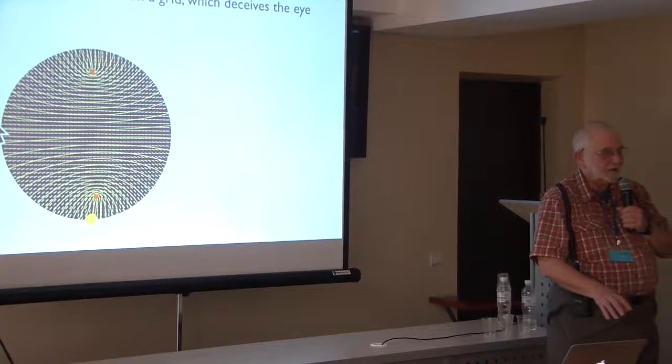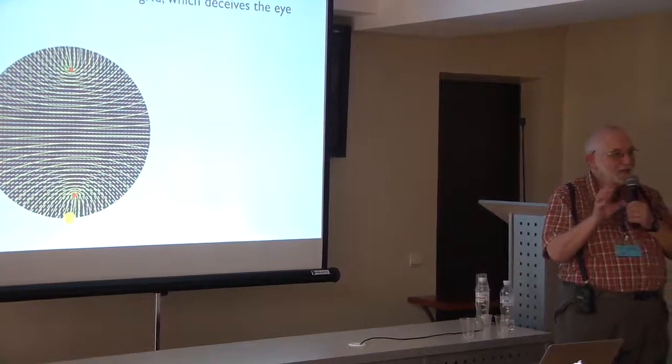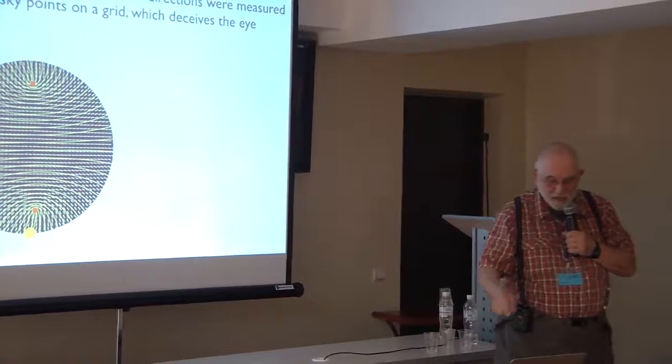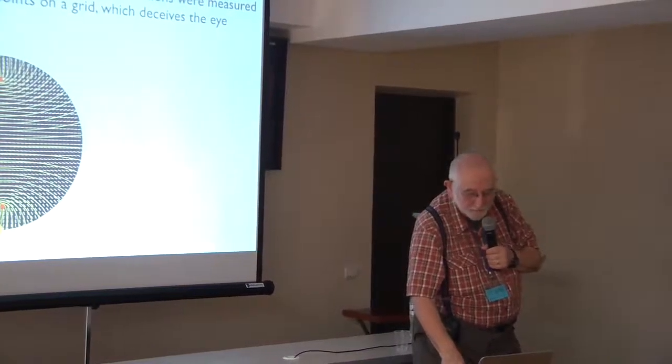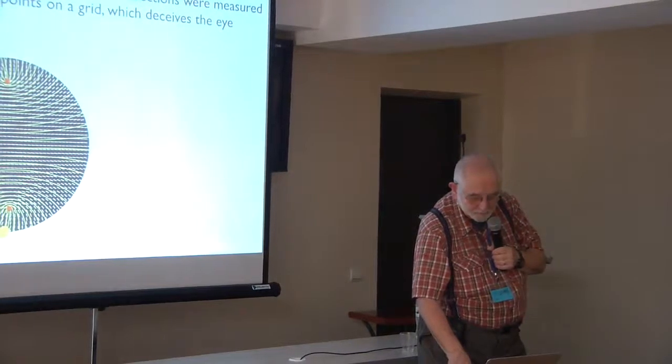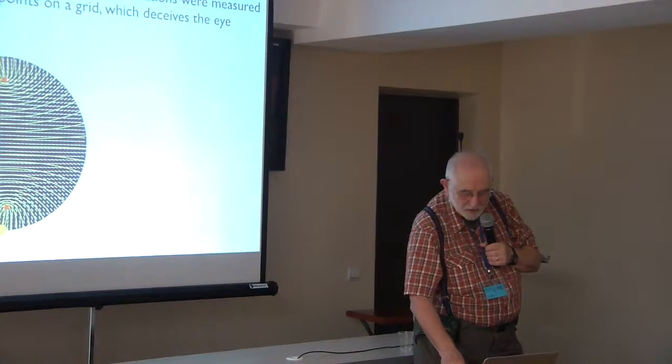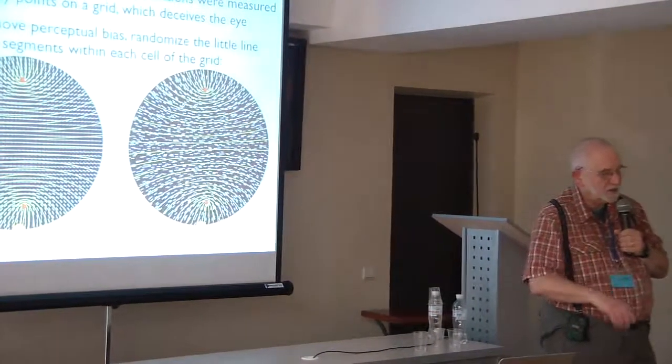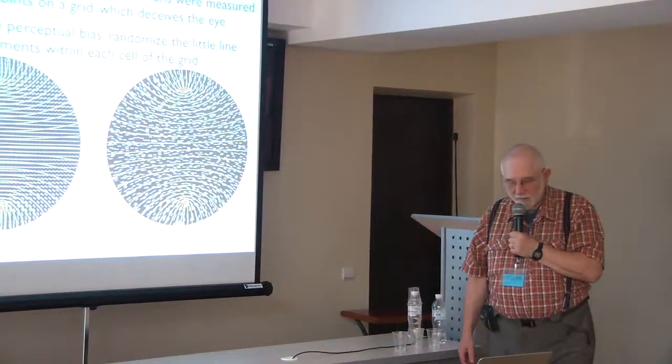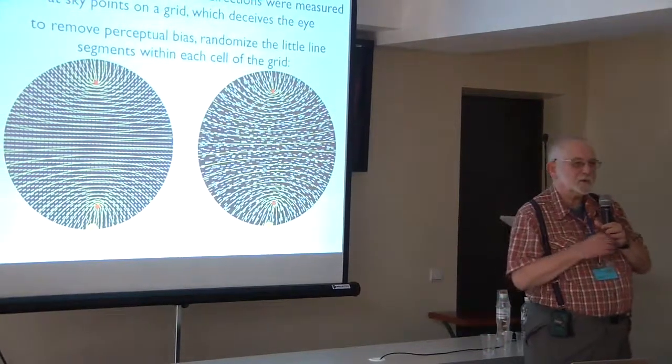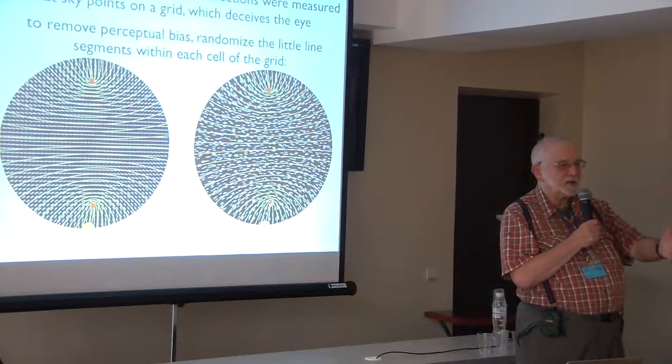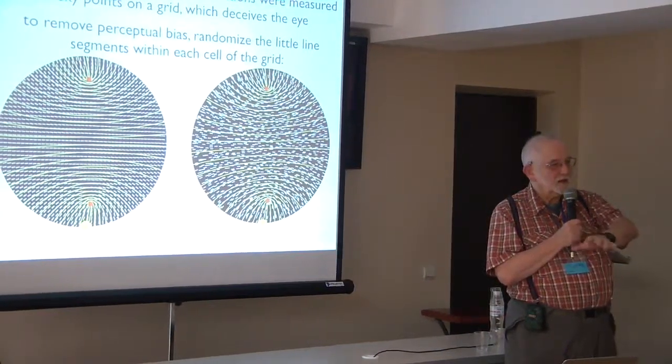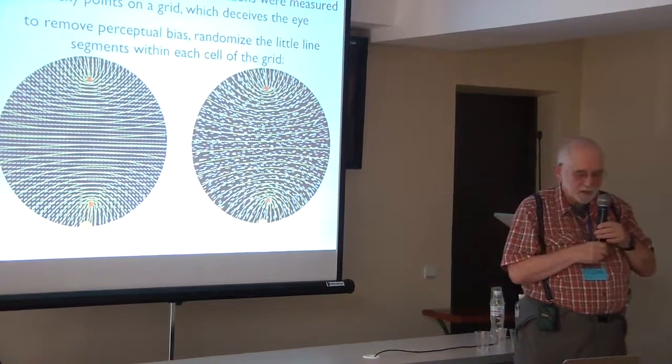Well we published a picture like this, and only later did we realize that we can eliminate this distortion effect caused by our perception by randomizing the positions of these little line segments within each picture. When you do that, you immediately get the picture. I've colored it differently than the picture I showed you before. So that's a good illustration of how sometimes you have to be careful how you present data, because you don't want the distorting effect of your perceptions to spoil the comparison between theory and experiment.